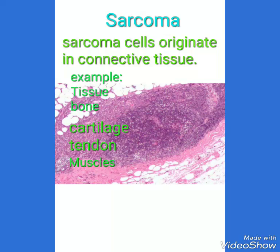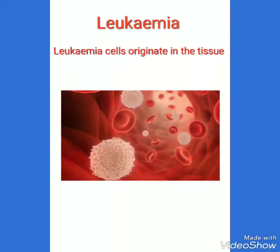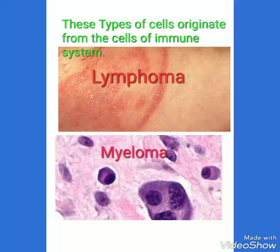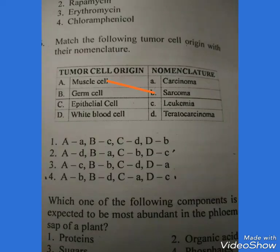Next is leukemia. Leukemia cells originate in the tissue which produces red blood cells or white blood cells, so the cancer of blood cells is known as leukemia. Next is lymphoma and myeloma. These types of cells originate from the cells of the immune system.